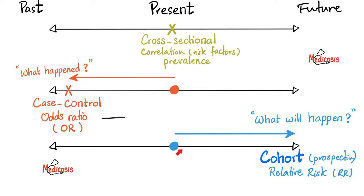In cohort studies, we live in the present but follow up to see the future. You're smoking cigarettes right now — let's see whether you will develop lung cancer in the future. This is a prospective cohort study, and we perform it to find out the relative risk. If it's called relative, it implies division.